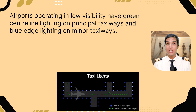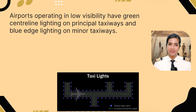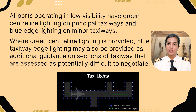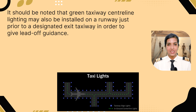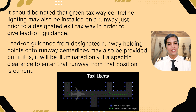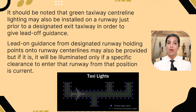Airports operating in low visibility have green centerline lighting on the principal taxiways and blue edge lighting on the minor taxiways. Where green centerline lighting is provided, blue taxiway edge lighting may also be provided as additional guidance on sections of a taxiway assessed as potentially difficult to negotiate. It should be noted that green taxiway centerline lighting may also be installed on a runway just prior to a designated exitway in order to give lead-off guidance.